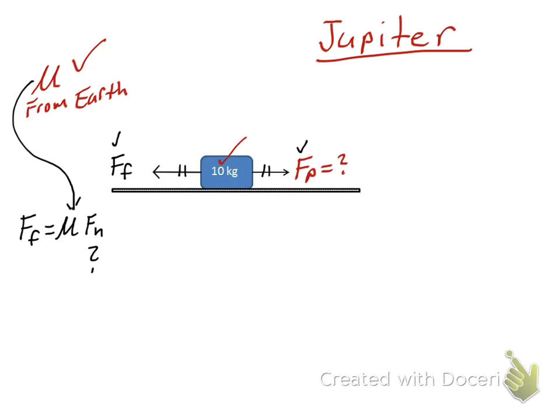So the last piece of the puzzle here is I've got to find force normal. Force normal on Jupiter is still a perpendicular vector that is in equilibrium with the weight. So the key to this problem, it's exactly the same way as we solved it on Earth. It's an equilibrium problem.